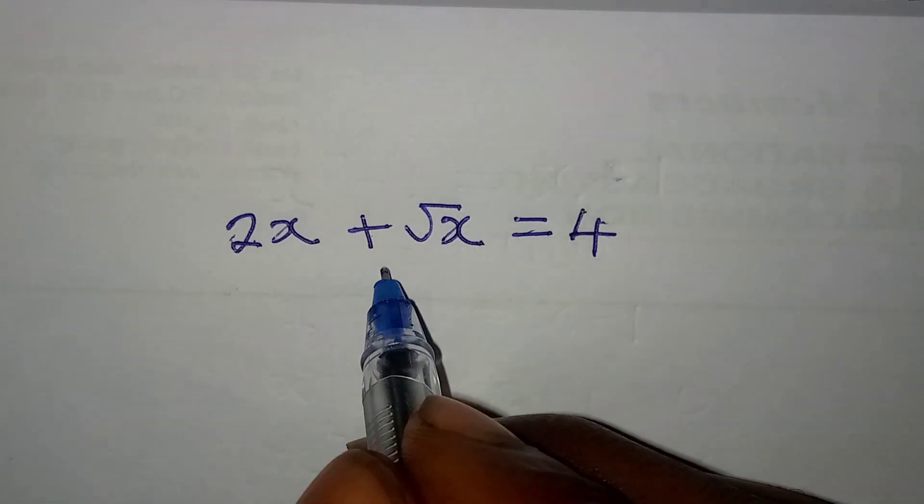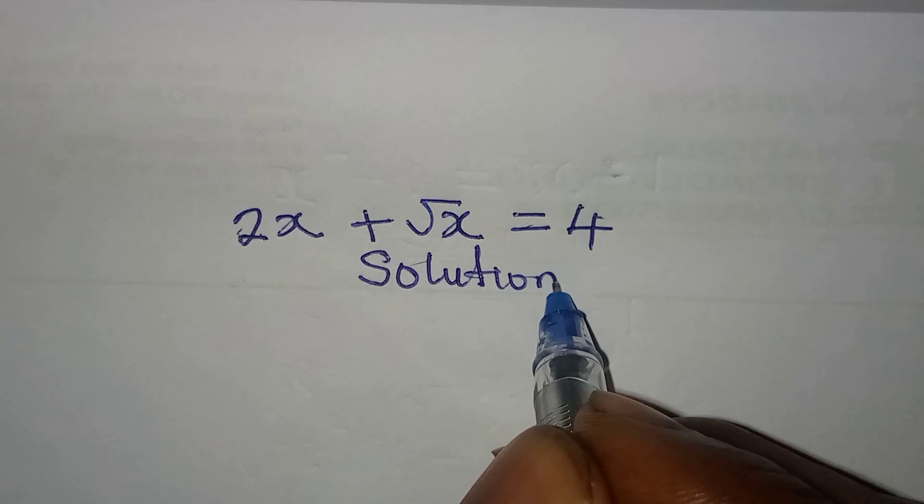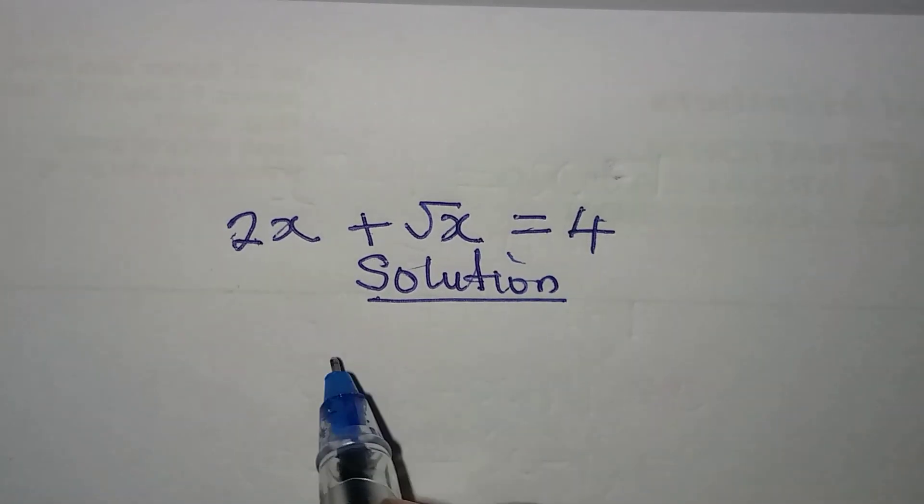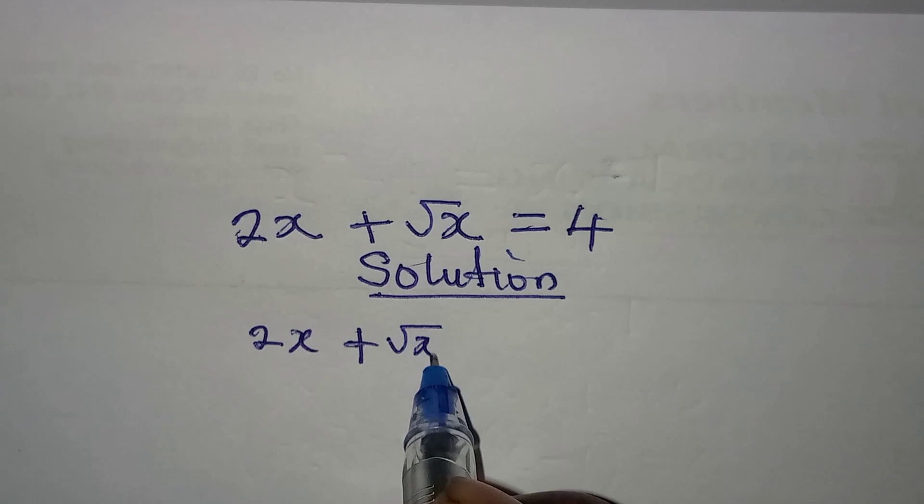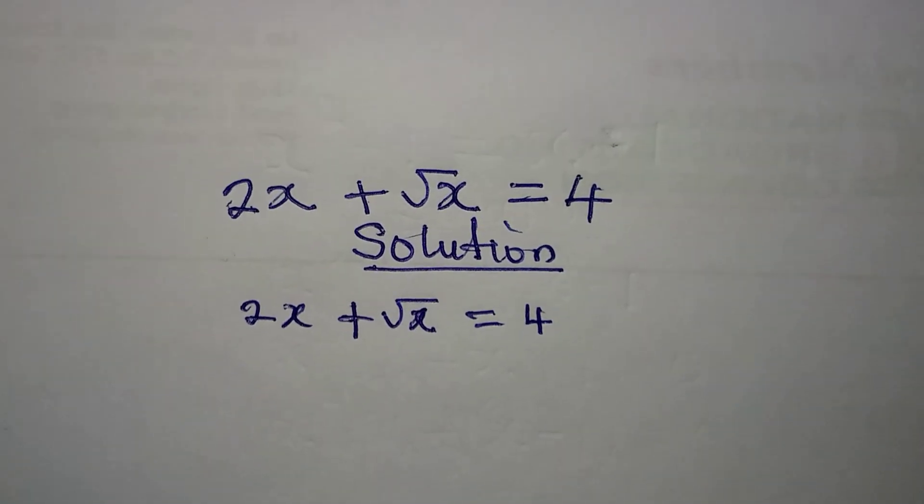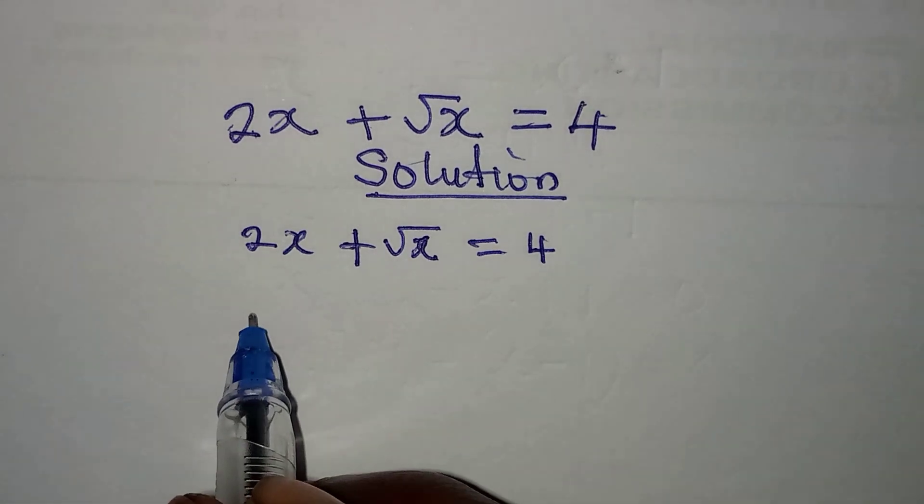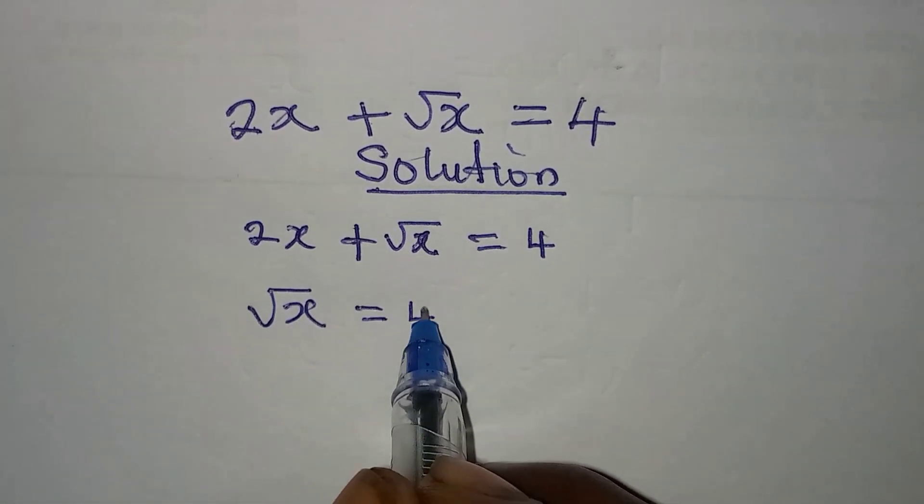Hello everyone, let's solve this problem right away. We have 2x + √x = 4. The first thing I will do is make √x the subject, and it should be equal to 4 - 2x.